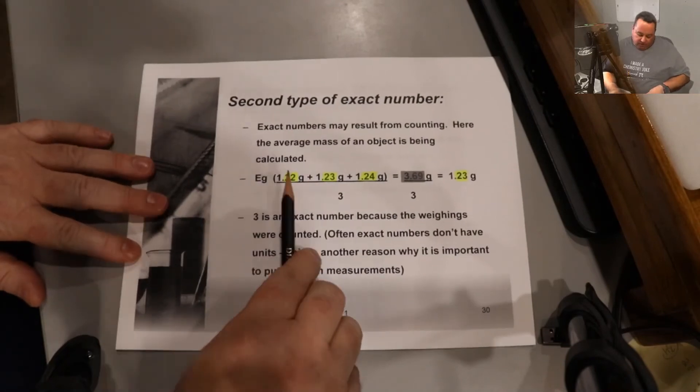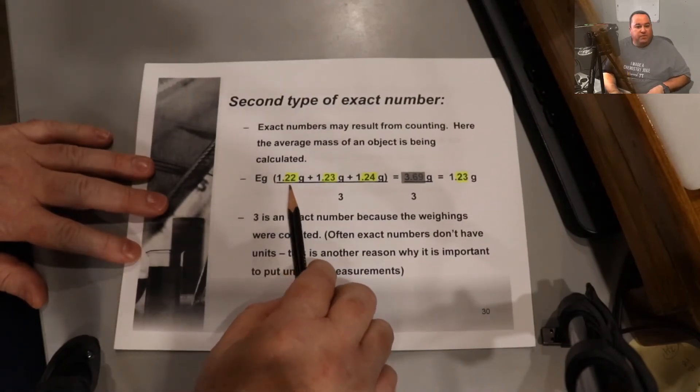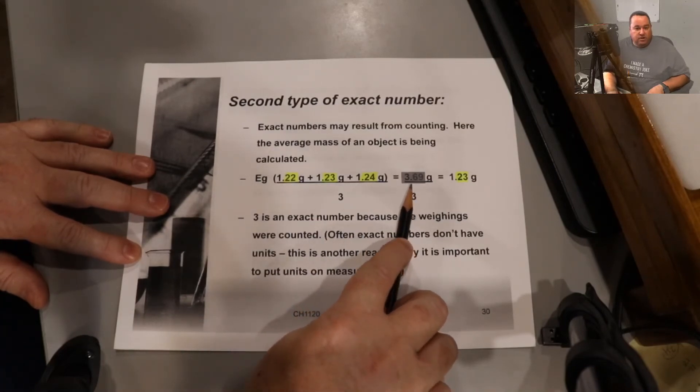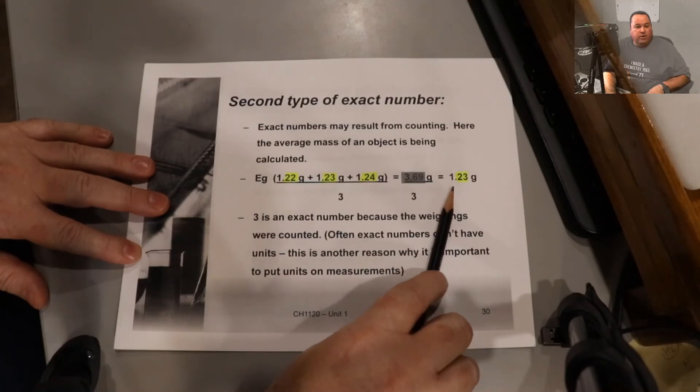This example is a little bit better. We have three masses here. We're adding them, dividing by three in order to take an average. And the result, 1.23, has two decimal places, just like the original measurements.